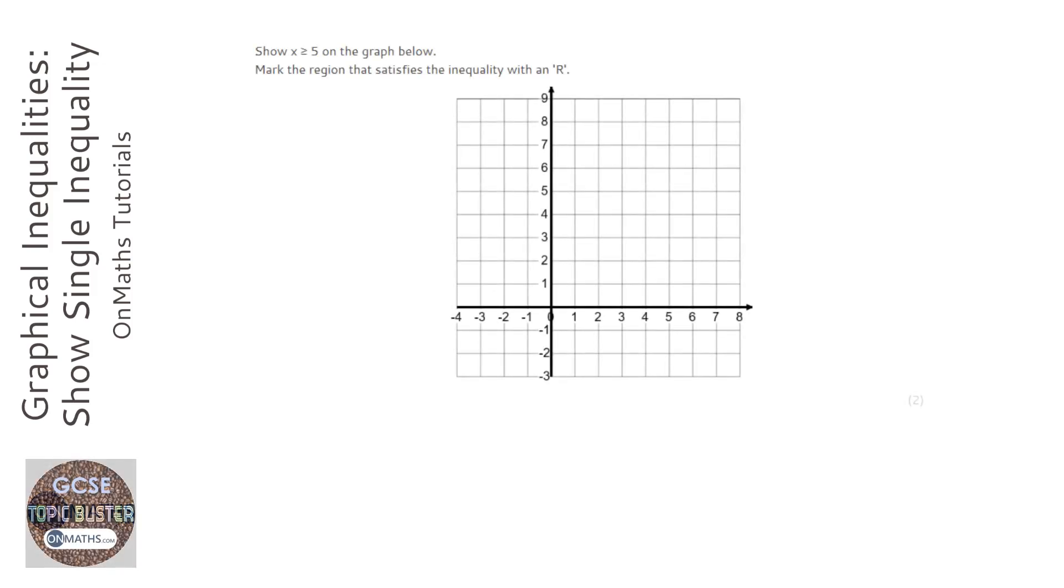Whenever we're asked to find an inequality or draw an inequality onto a graph, always draw the line but without the inequality in it. So instead of x is greater than or equal to 5, always draw the line x equals 5.